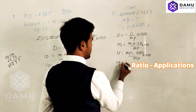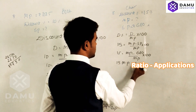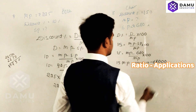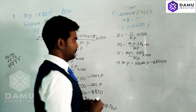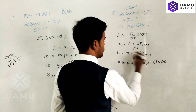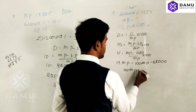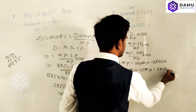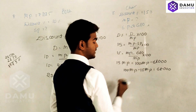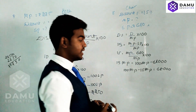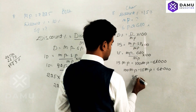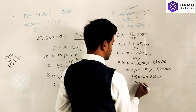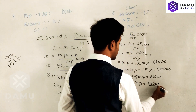Cross-multiplying: 15 times MP equals (MP minus 680) times 100, giving 100·MP minus 68000. Rearranging: 100·MP minus 15·MP equals 68000. So 85·MP equals 68000. Therefore market price equals 68000 divided by 85.